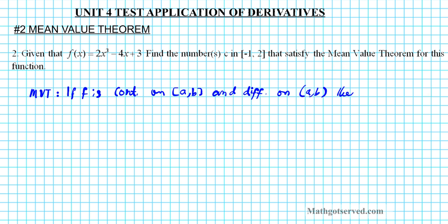there exists a C in AB such that f prime of C, the slope of the tangent line at x equals C is equal to the average rate of change from A to B. f of B minus f of A divided by B minus A.